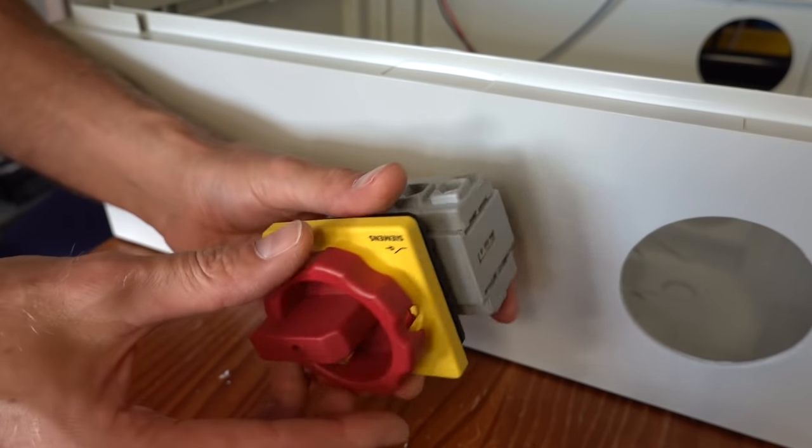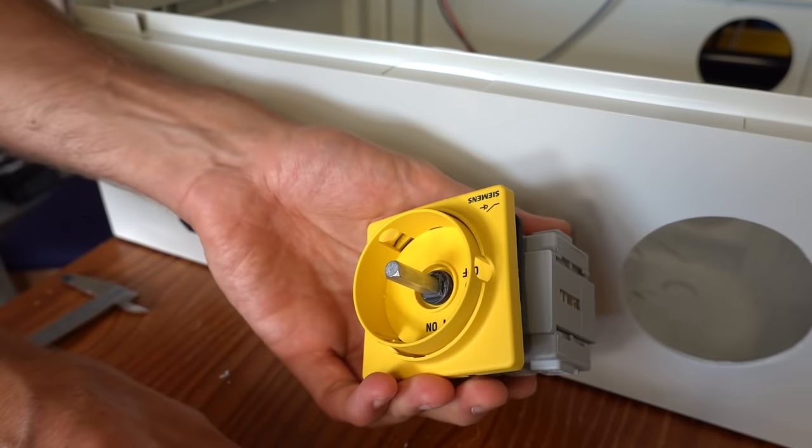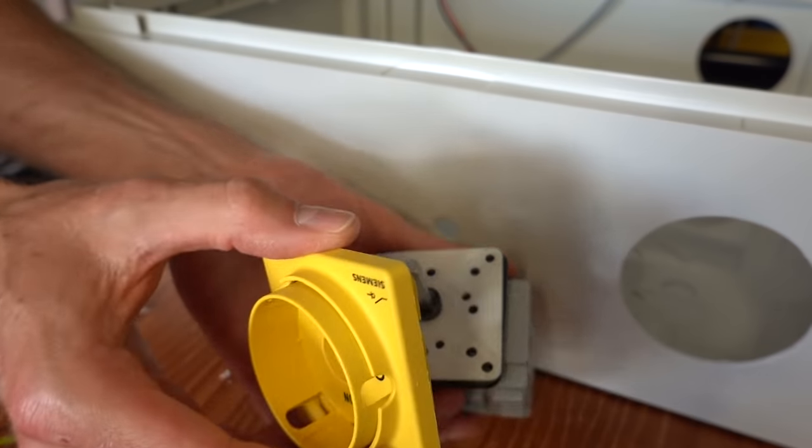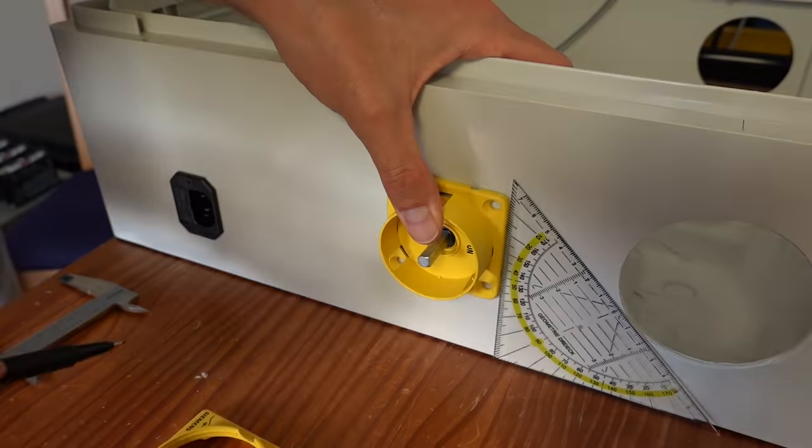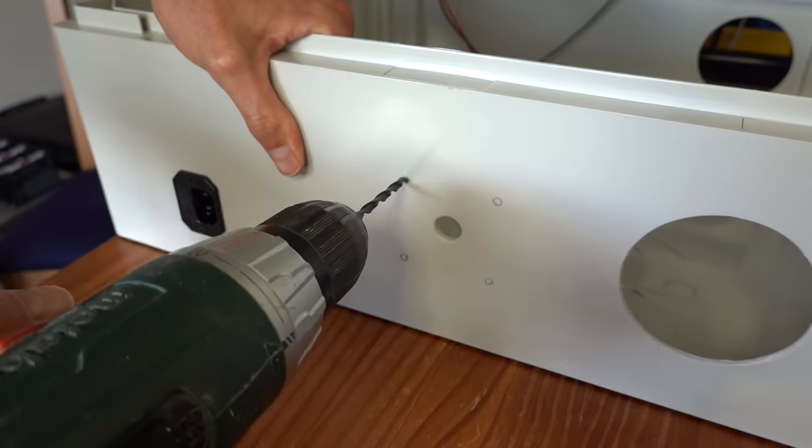Here I am installing the mains power switch that was discussed earlier. The front of the switch has to be removed before it can be mounted to the side of the cabinet. Now it's just a matter of aligning it properly and drilling some holes for the mounting screws.